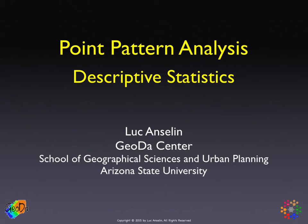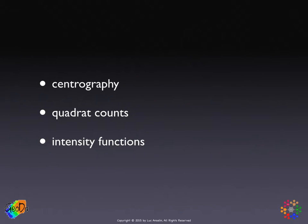In this third part of the module on point pattern analysis, we'll go over a number of descriptive statistics. These are classic traditional methods used to summarize the main features of a point pattern. We'll cover three in particular: centrography, which is geometrically oriented; quadrat counts, which are counts of points in a quadrat or polygon; and intensity functions, also known as kernel functions or heat maps.